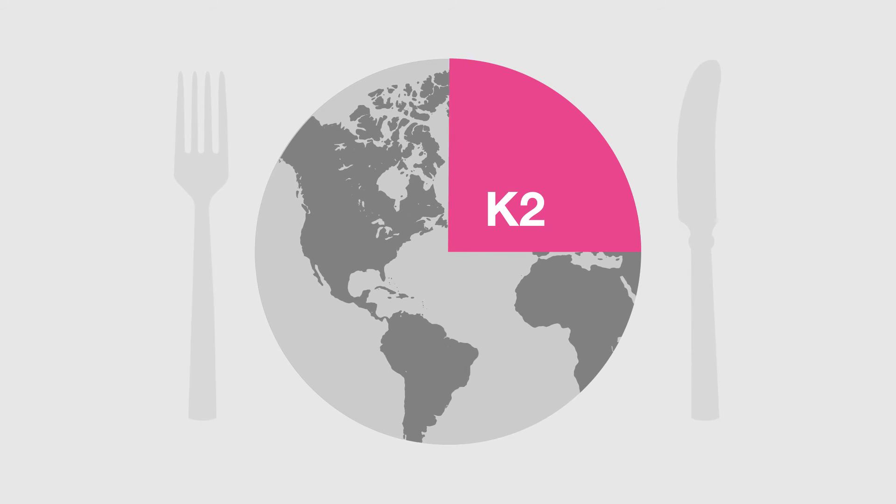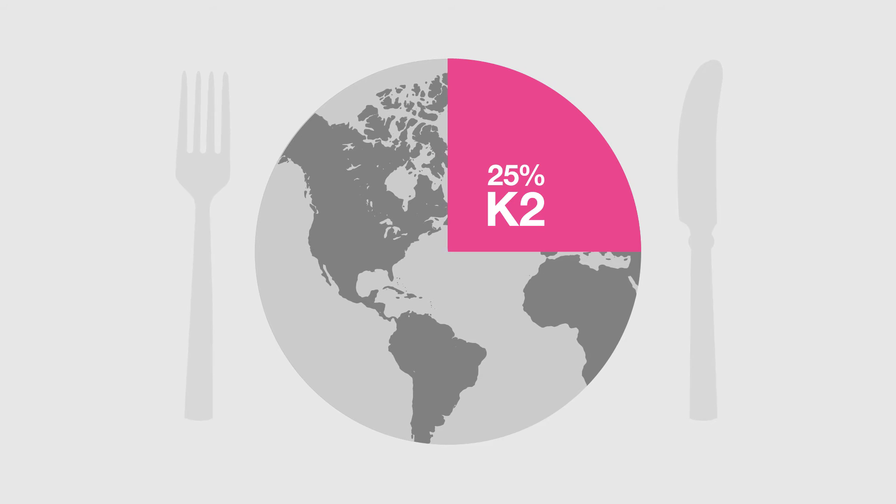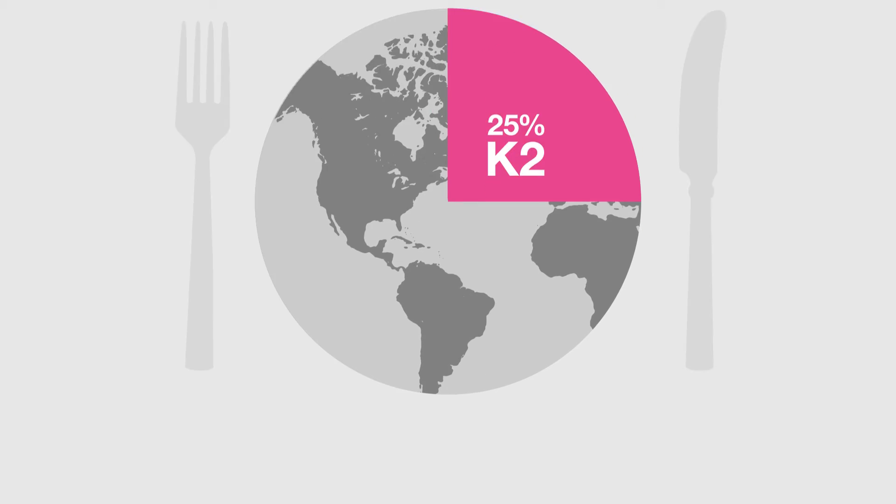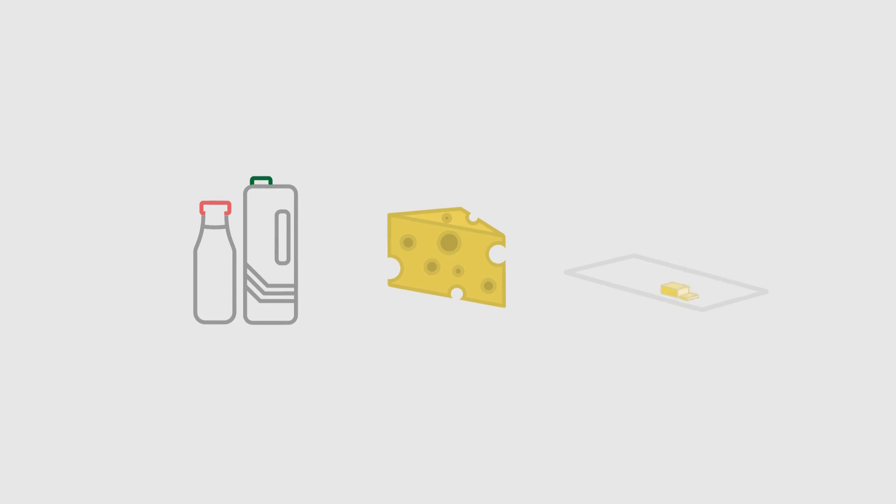It was previously thought that adequate levels of K2 were available through diet. However, the Western diet typically only provides 25% of the nutrient reference value. While some K2 can be found in dairy products such as milk, cheese and butter, this is only a very low amount.